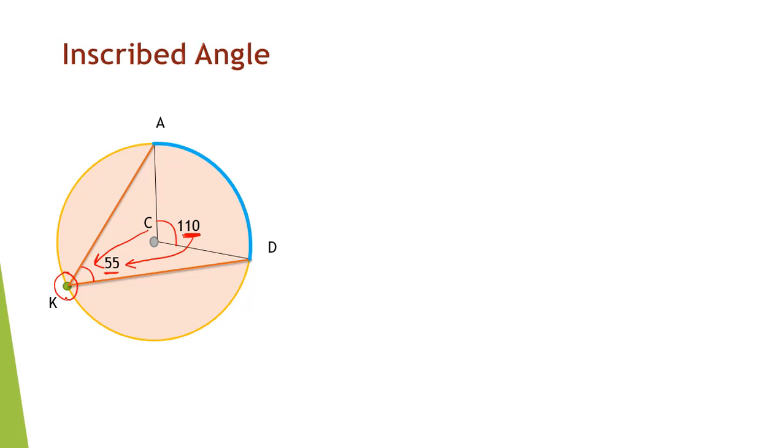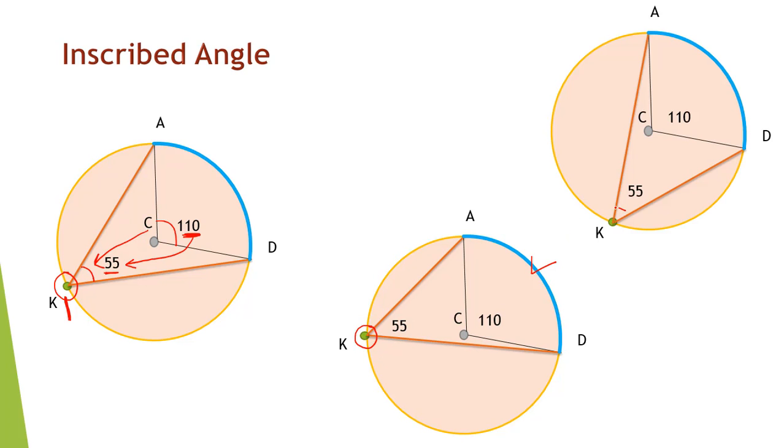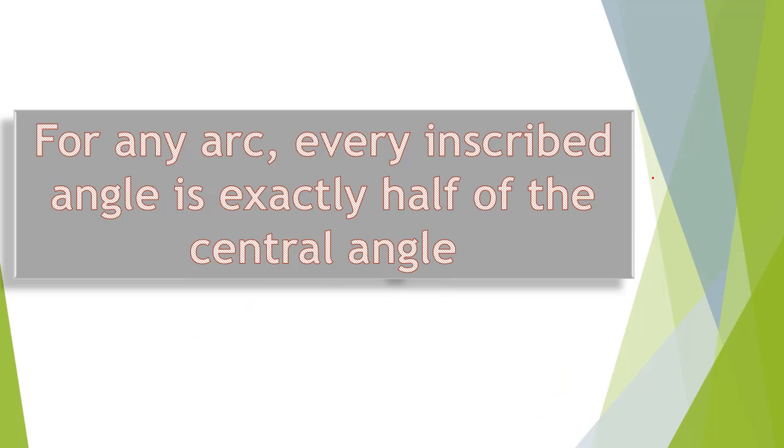Now let's change the position of this point K. The arc would remain the same. Now we can see that whatever point we take, the inscribed angle for this arc is half of the central angle. So we can say, for any arc, every inscribed angle is exactly half of the central angle.